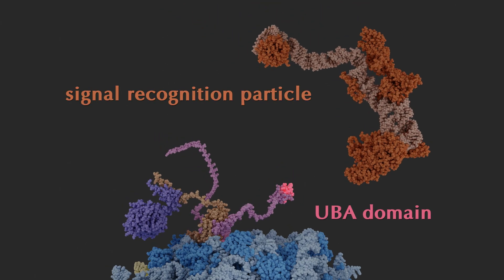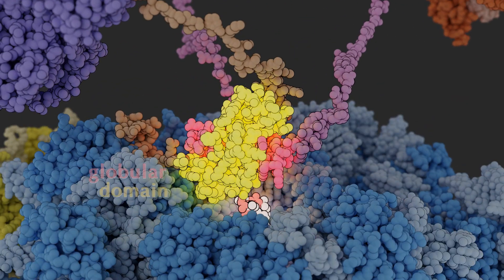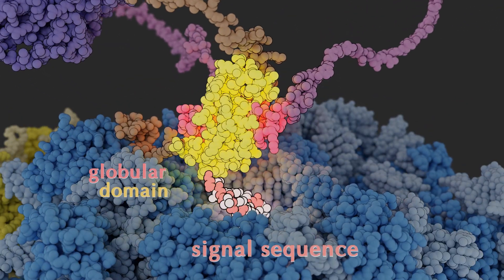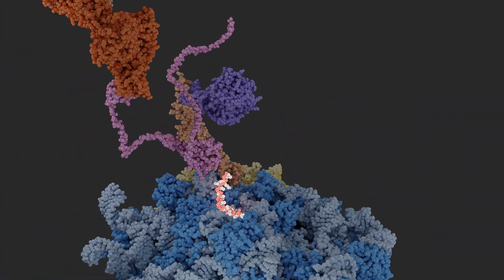A different flexible tail of NAC binds signal recognition particle, or SRP. This ribosome is synthesizing a future membrane protein containing a signal sequence at its beginning, which destabilizes the globular domain of NAC.